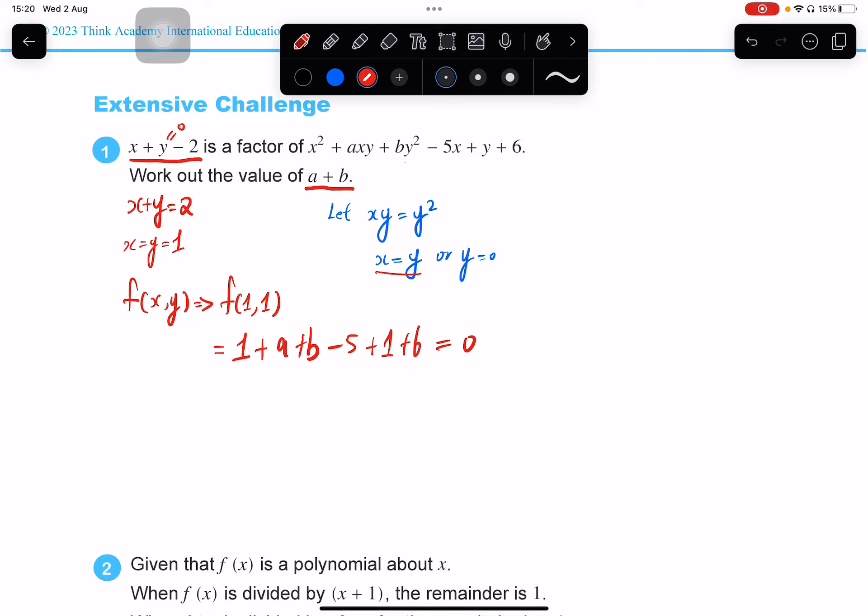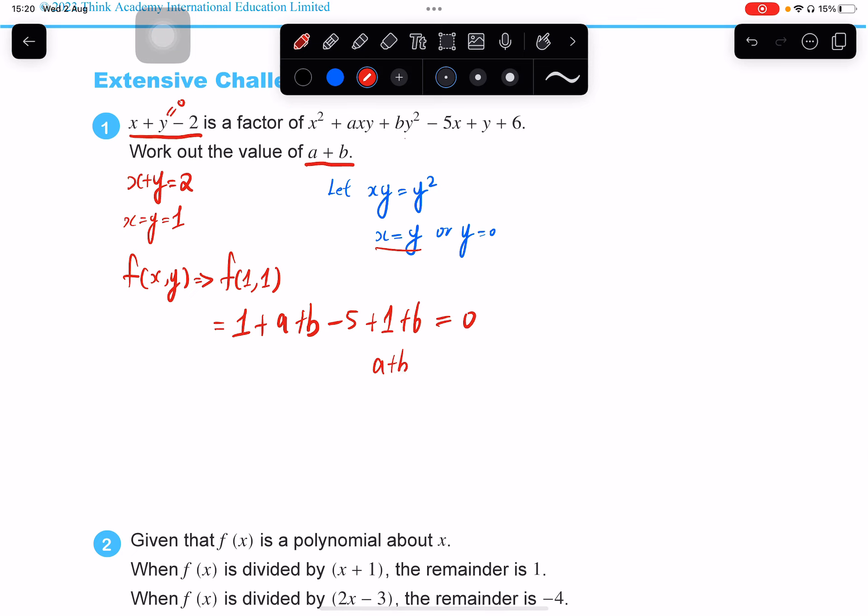And that's solved. Basically, I have 8 take away 5, that is 3, adding a, adding b equals 0, which means a adding b is minus 3. So that's how we can solve this first question in the extensive challenges.